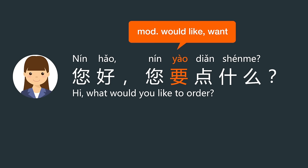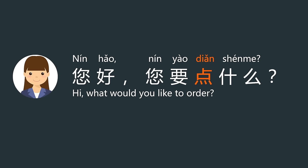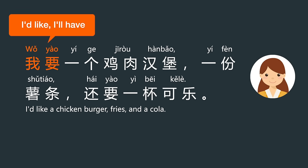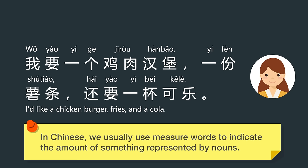您要点什么 — 您要 means 'you want,' 点 means 'to order.' So 您要点什么 means 'What would you like to order?' 我要一个鸡肉汉堡，一份薯条，还要一杯可乐 — 我要 means 'I'd like' or 'I'll have.' In Chinese we usually use measure words to indicate the amount of something represented by nouns.